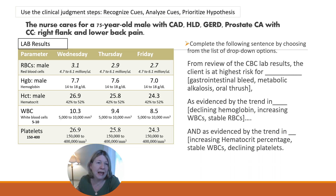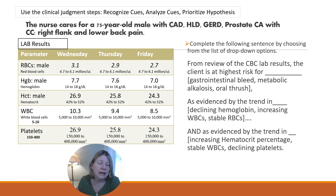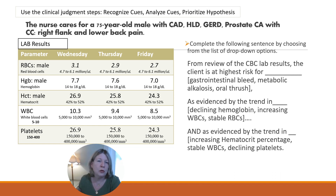We're provided with lab results, and we see a trend on Wednesday, Thursday, and Friday. Within the CBC, we see the red blood cell counts, hemoglobins, hematocrit, white blood cell count, and platelets. On the national exam, they're going to give you the normal ranges, and you're going to compare your lab results to how they fare with the normal ranges.